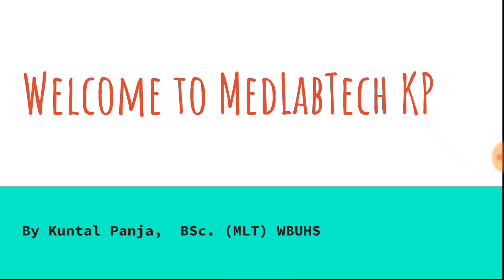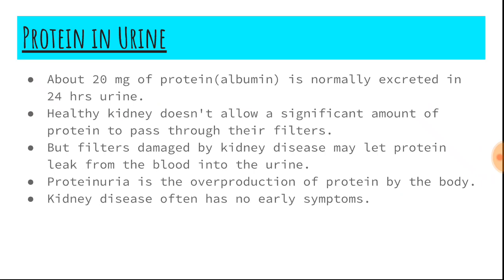Let's see protein in urine. Introduction: about 20 mg of protein, that is albumin, is normally excreted in 24-hour urine. A healthy kidney does not allow a significant amount of protein to pass through its filters, but filters damaged by kidney disease may let protein leak from the blood into the urine, causing proteinuria due to overproduction of protein by the body.